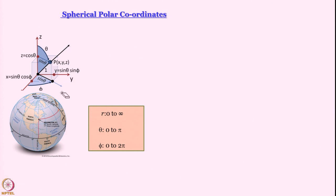If you drop a perpendicular from the tip of the position vector arrow to the x-y plane, the arrow you get in the x-y plane is the projection of the position vector. The angle between the x-axis and this projection vector is called φ.